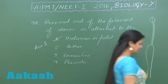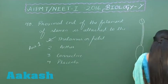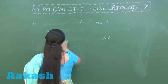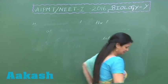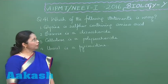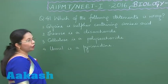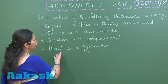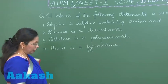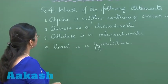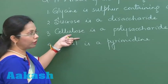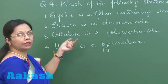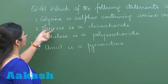Now let's discuss question number 41: which of the following statements is wrong? Uracil is a pyrimidine — that's correct. Cellulose is a polysaccharide — that's also correct. Sucrose is a disaccharide — that's also correct.